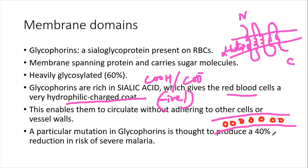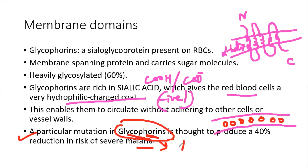A particular mutation in glycophorin is thought to produce a 40% reduction in risk of severe malaria. Usually mutations in proteins are not beneficial for human survival, but in a few cases mutations become a benefit. People with normal glycophorin tend to have a high risk of malaria in malaria-rich areas, whereas people with a mutation in glycophorin have less chance of getting malaria.